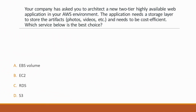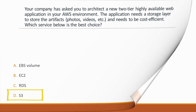Next question: Your company needs a storage layer for a two-tier highly available web application to store artifacts, photos, videos, etc., and needs to be cost-efficient. Which service is the best choice? Options: A. EBS volume, B. EC2, C. RDS, D. S3. Correct answer is option D, S3, because S3 is AWS's default storage service that provides durable storage for all static content and offers object-level storage.